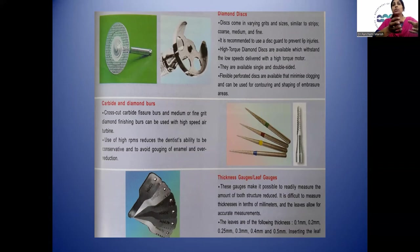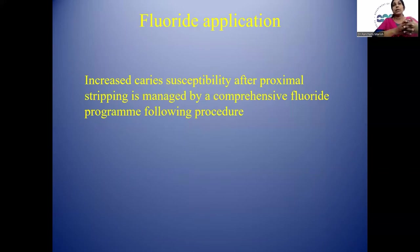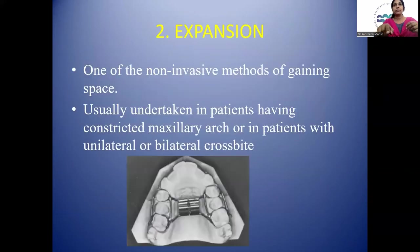Leaf gauges are used to measure the amount of tooth structure reduced. They allow accurate measurements and are available in different thicknesses: 0.1 mm, 0.2 mm, 0.25 mm, 0.3 mm, 0.4 mm, and 0.5 mm. Inserting these different sizes gives the amount of tooth material reduced. After proximal stripping is complete, teeth are susceptible to caries and this must be managed by a comprehensive fluoride program following the procedure.